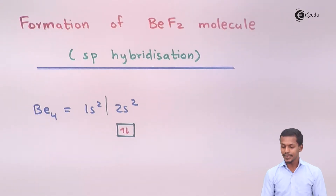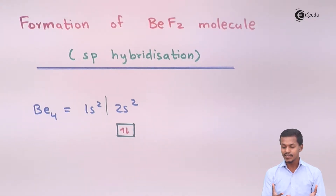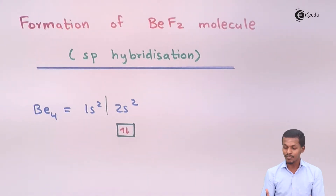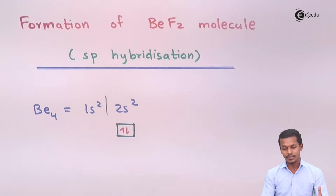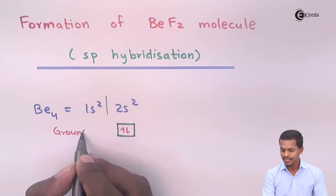Since there is no unpaired electron, and from valence bond theory we know that a bond is formed only because of unpaired electrons — since there is no unpaired electron present in beryllium — it cannot form a bond with fluorine, not even with one fluorine atom. So obviously it has to create unpaired electrons. In this electron configuration, beryllium is in the ground state.